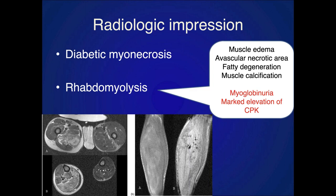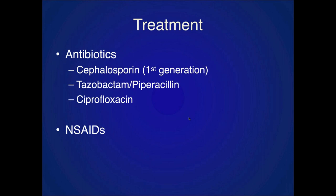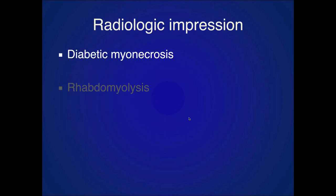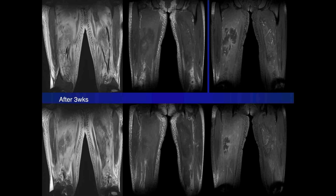The white count was normal, but there should still be concern about infection. This was diabetic myonecrosis, which is thought to be an ischemic lesion. The patient was treated with antibiotics and NSAIDs.